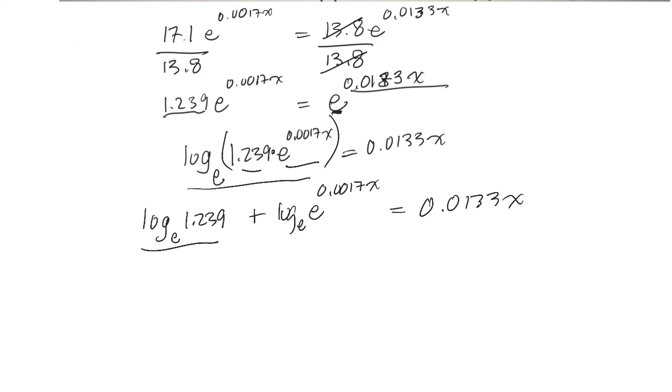Okay, this is something I can figure out. So the ln of 1.239 is 0.214 plus, now I can use the power rule to bring this out front, 0.0017x. And then log base e of e is 1 equals 0.0133x.